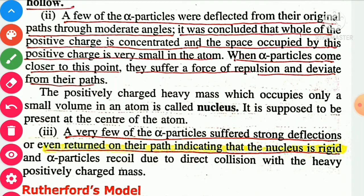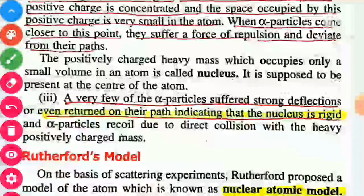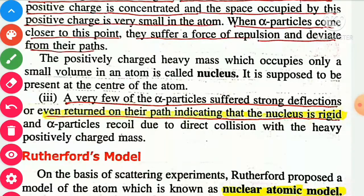The nucleus is supposed to be present at the center of the atom. A very few of the alpha particles suffered large deflections or even returned on their path, indicating that the nucleus is rigid — very hard — and that alpha particles recoil due to direct collision with the heavy positively charged mass.